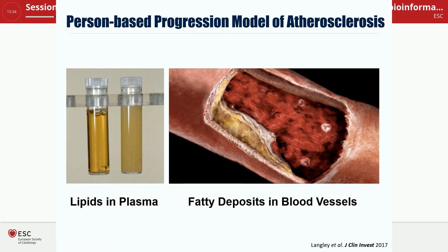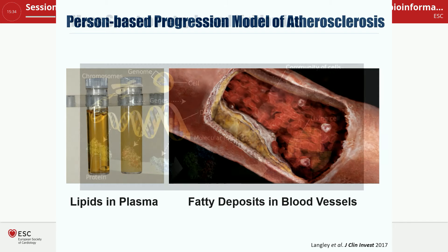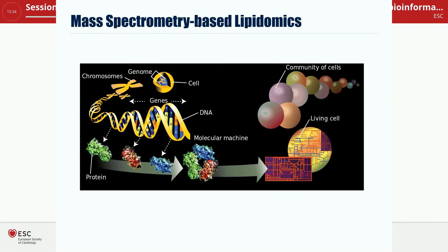One of the key questions we like to address is how the kind of lipids circulating in the plasma ultimately end up in our arteries, and whether we have better tools to identify individuals who are at risk of developing disease. This is a short summary of a study we did a while ago using mass spectrometry-based lipidomics.